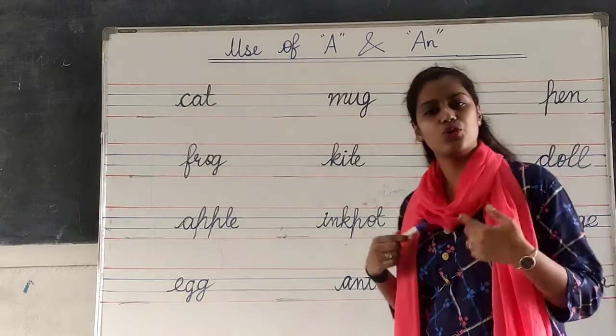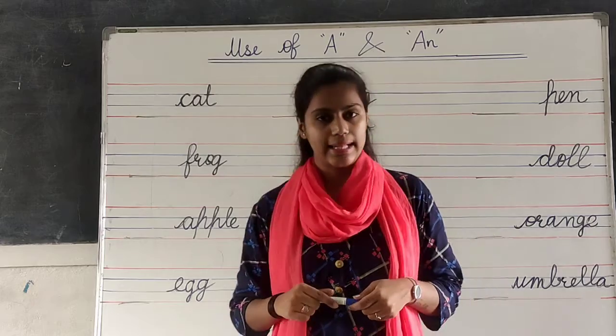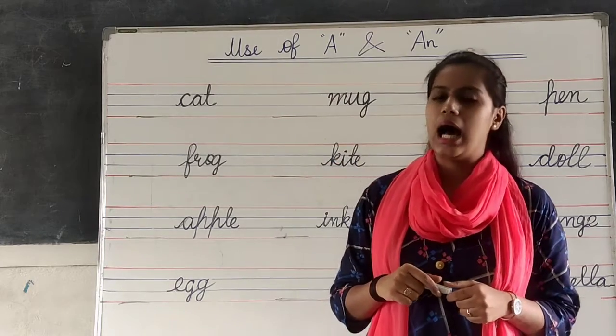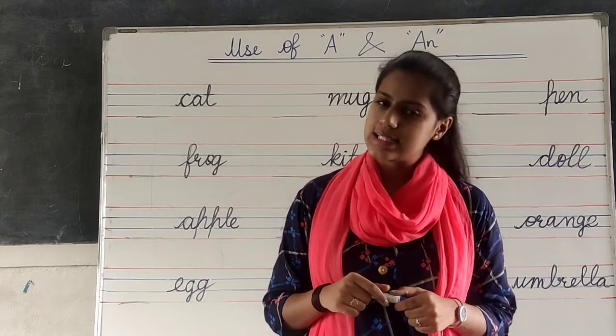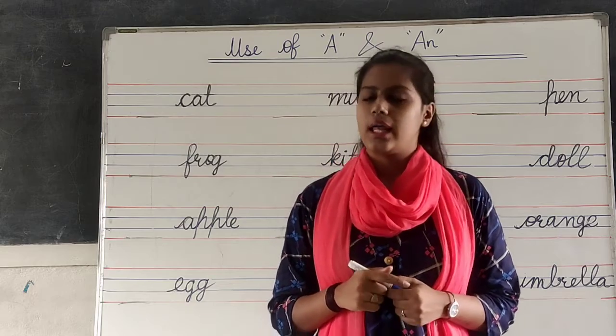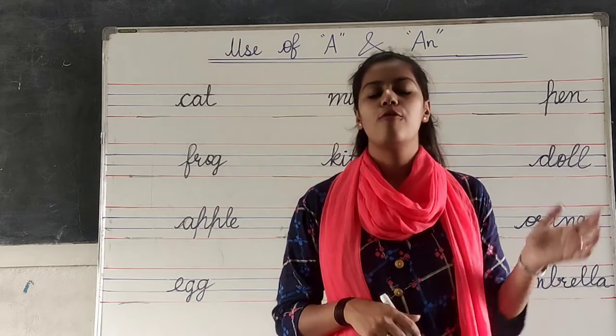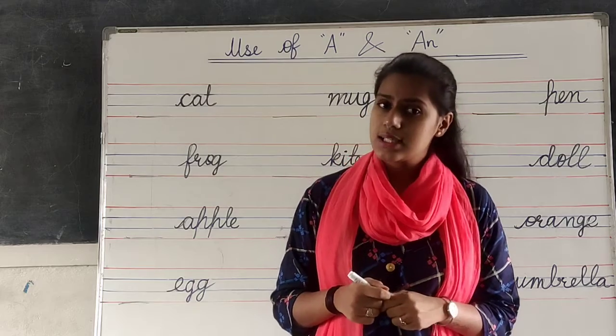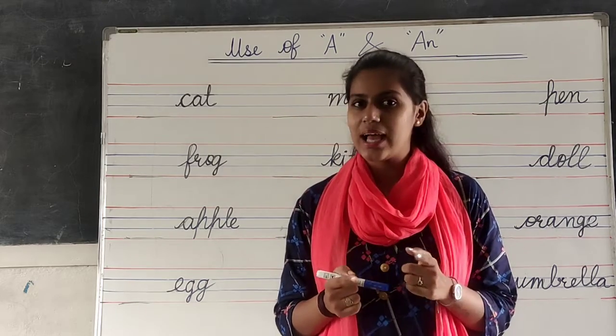Okay students? As you all know, in English alphabet, there are 26 letters. Right? In 26 letters, 5 letters are vowels. Yes, you all know that.